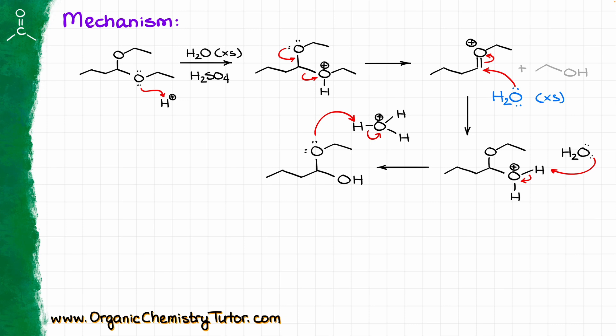Now, we are going to make another OR group as our leaving group that gives, well, the leaving group, which going to dissociate, giving us the protonated final product. And after the last step, where water is going to come in and pull that proton off, we are going to end up with our final product, an aldehyde in this case.